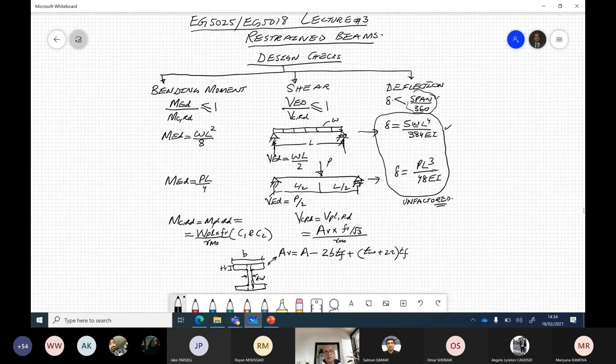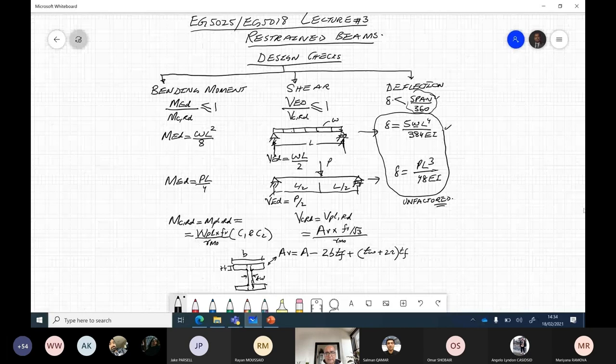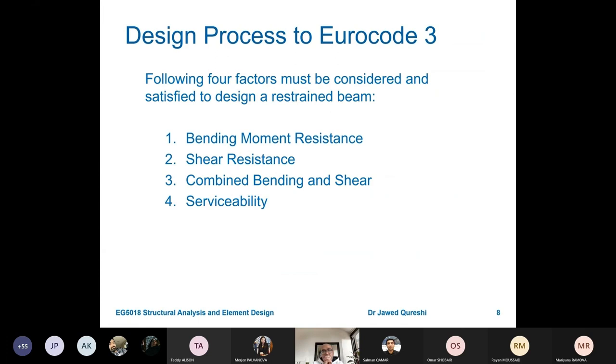t_f is thickness of flange. t_w is thickness of web. r is root radius. Wherever you see this term ED, it means it is applied, and wherever you see this term RD, it means that it is the resistance. We need to check three things: bending, shear, and serviceability. These are three main things.